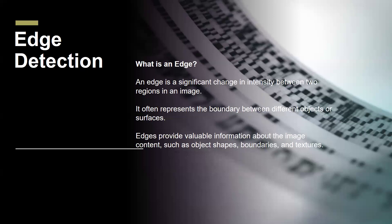So, edge detection — what is an edge? An edge is a significant change in intensity between two regions. An image edge often represents the boundary between different objects or surfaces. Edges provide valuable information about an object's shape, boundaries, and textures.